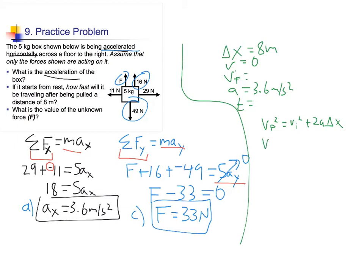What I end up getting is VF squared is going to be equal to 0 squared plus 2 times 3.6 times 8. So, I find that VF squared is simply 57.6. And so, my final velocity here is 7.6 meters per second. And there we have my answer to part B.